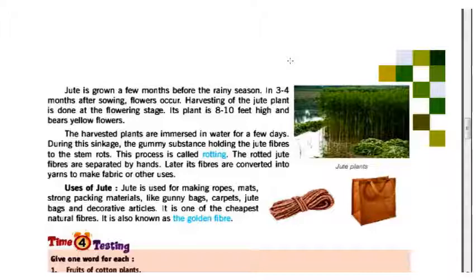The jute plant is 8 to 10 feet high and bears yellow flowers. Harvesting of the jute plant is done at the flowering stage. The harvested plants are immersed in water for a few days. During this retting, the gummy substance holding the jute fiber to the stem dissolves. This process is called rotting.